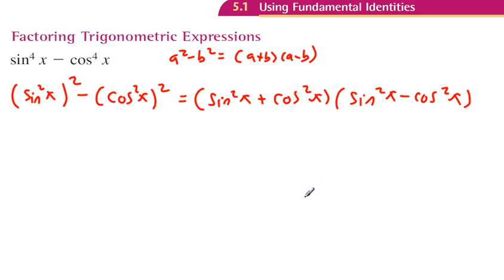Don't stop there. There's always more fun. Do you notice that this right here is our Pythagorean identity? Sine squared plus cosine squared is just 1. So this is 1 times sine squared of x minus cosine squared of x.